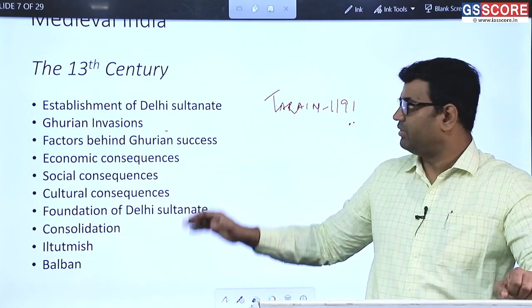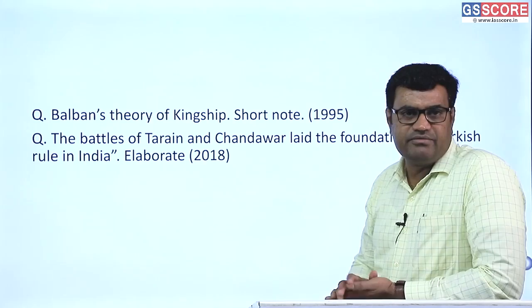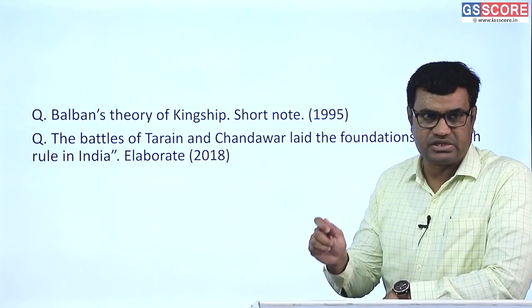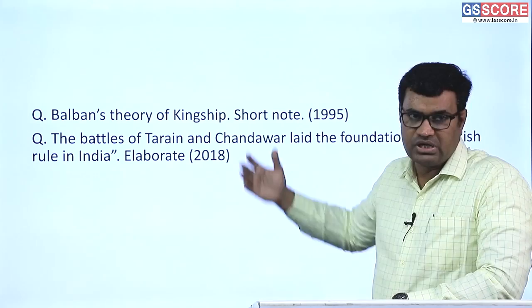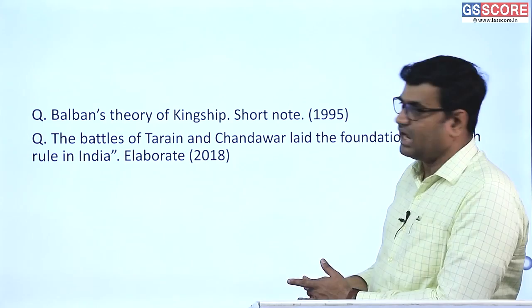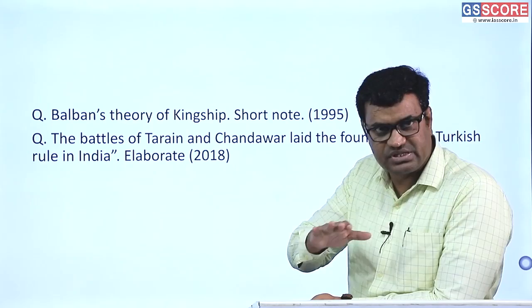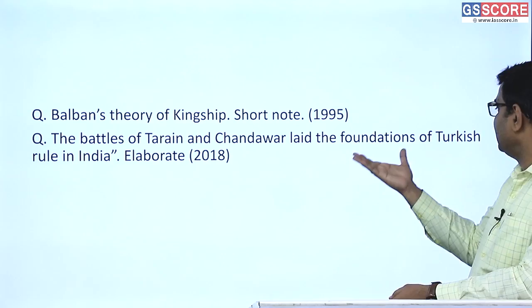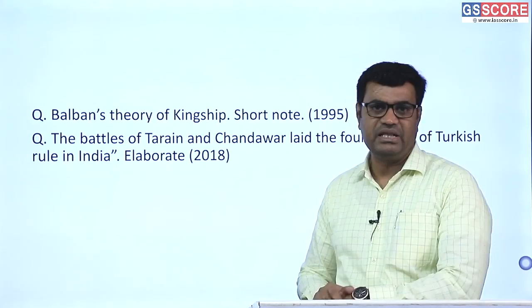Previous year questions from the 13th century include: Balban's theory of kingship. Balban believed in the divine origin of kingship; he believed no person or noble was his equal, treating them with strict impunity, and introduced the concept of Sijda and Paibos to show he was next to God on earth. Another question: the battles of Tarain and Chandavar that laid the foundation of Turkish rule in India. The defeat of Prithviraj Chauhan marked the end of effective Rajput resistance, and the defeat of Jaichand in 1194 marked its complete end, establishing the foundation of Turkish rule.